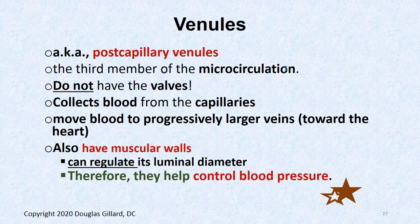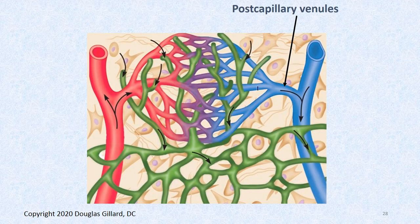Now we're through the capillary. The first thing blood runs into is a venule, sometimes called a post-capillary venule — the third member of the microcirculation, along with arterioles and capillaries. These venules are valveless and pass blood to bigger veins, which do start to have valves, especially in the lower extremities. They also have fairly muscular walls and can help with blood pressure control.